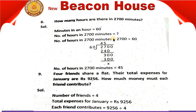What is the method? The number of hours in 2700 minutes equals 2700 minutes. You can divide by 60 using the following process.